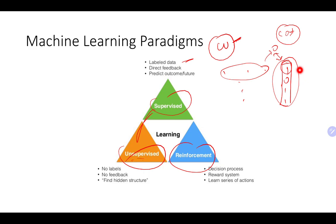The main difference with unsupervised learning is that there is no label. There is data but there is no label. What we can do is learn different patterns from this data and do clustering — get some insights from the data. There's no direct feedback, so it's a bit harder. There are some methods to improve clusters, but you don't have an exact label you can compare your results to.